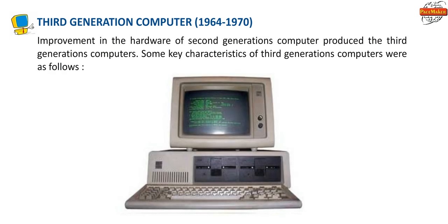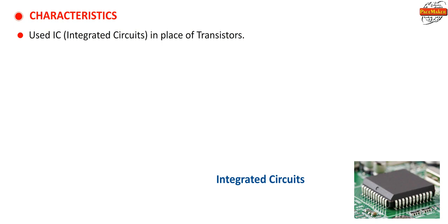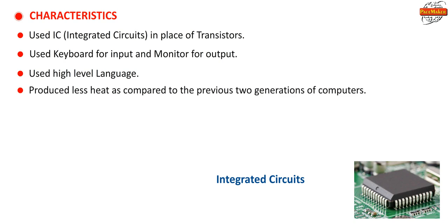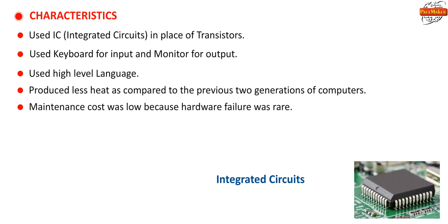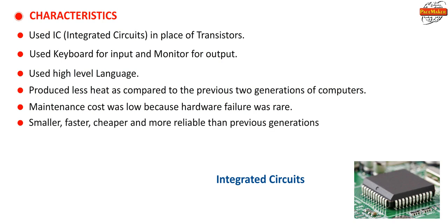Third Generation Computers (1964–1970): Improvement in the hardware of second generation computers produced the third generation computers. Key characteristics: they used ICs (integrated circuits) in place of transistors, used keyboard for input and monitor for output, used high-level language, produced less heat, and had low maintenance cost because hardware failure was rare. They were smaller, faster, cheaper and more reliable than previous generations. Examples: IBM 360, ICL 1900, Apple I, etc.